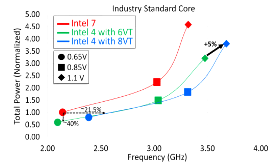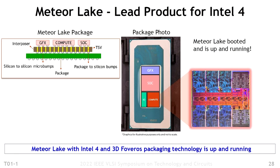Regarding individual transistor layers, Intel now puts 16 layers of metal for logic in the Intel 4 node, compared to 15 in the Intel 7 PDK. The gate is made from tungsten, while the first four metal layers are made from copper with cobalt cladding, ensuring better performance than plain copper. For the remaining layers, pure copper is used for interconnecting the wiring.